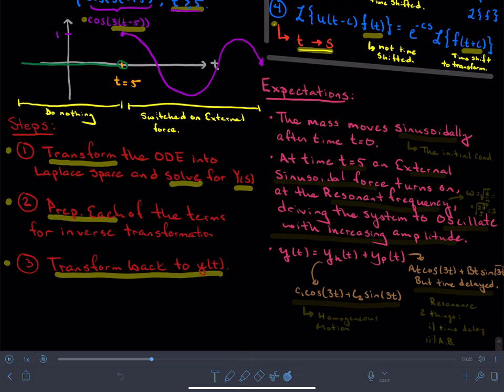So, before we do this, what are our expectations? Our expectations is that the mass will move sinusoidally after time t equals 0. Why is that? This is because of the initial conditions. And then at time t equals 5, an external sinusoidal force will kick on, and this is a key point of the problem.